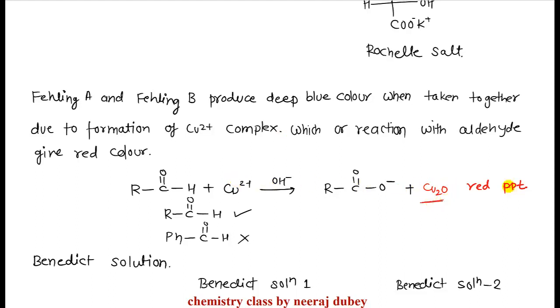When this mixture reacts with aldehyde, the copper(II) complex gets reduced to Cu2O, and Cu2O forms a red precipitate. The formation of this red precipitate is confirmation that an aldehyde is present in the compound and has been completely oxidized. So both Tollens' and Fehling's reagents oxidize aldehydes.